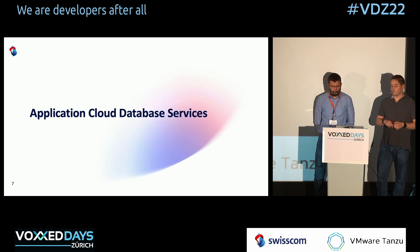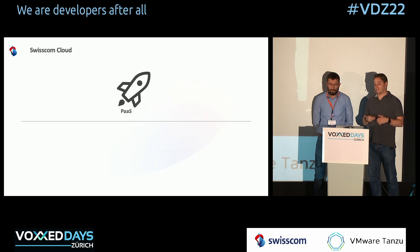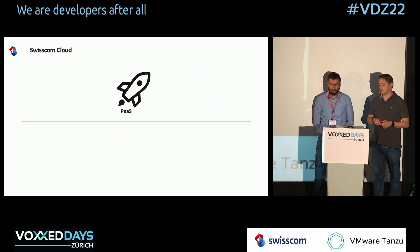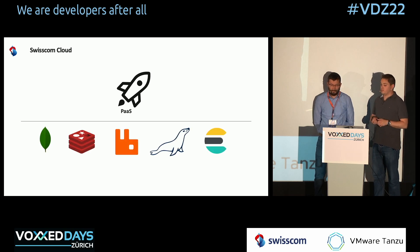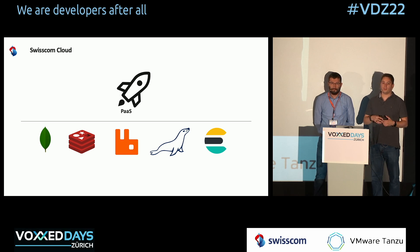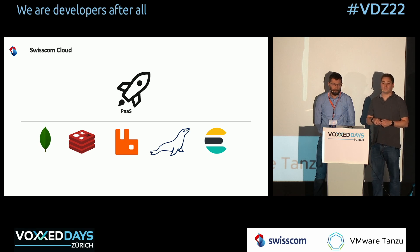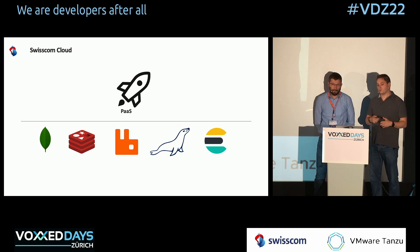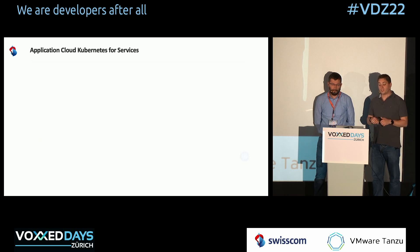With that introduction, let's go to our first use case. In Application Cloud — that's what we call our platform as a service — we have database services. As you might remember, that's what I'm responsible for. We have MongoDB, Redis, RabbitMQ, MariaDB, and Elasticsearch. For these we need some kind of platform to host them on. We had these based on virtual machines, but there was often a requirement for small-size, easy throwaway instances for development purposes, so we simply started with Kubernetes.